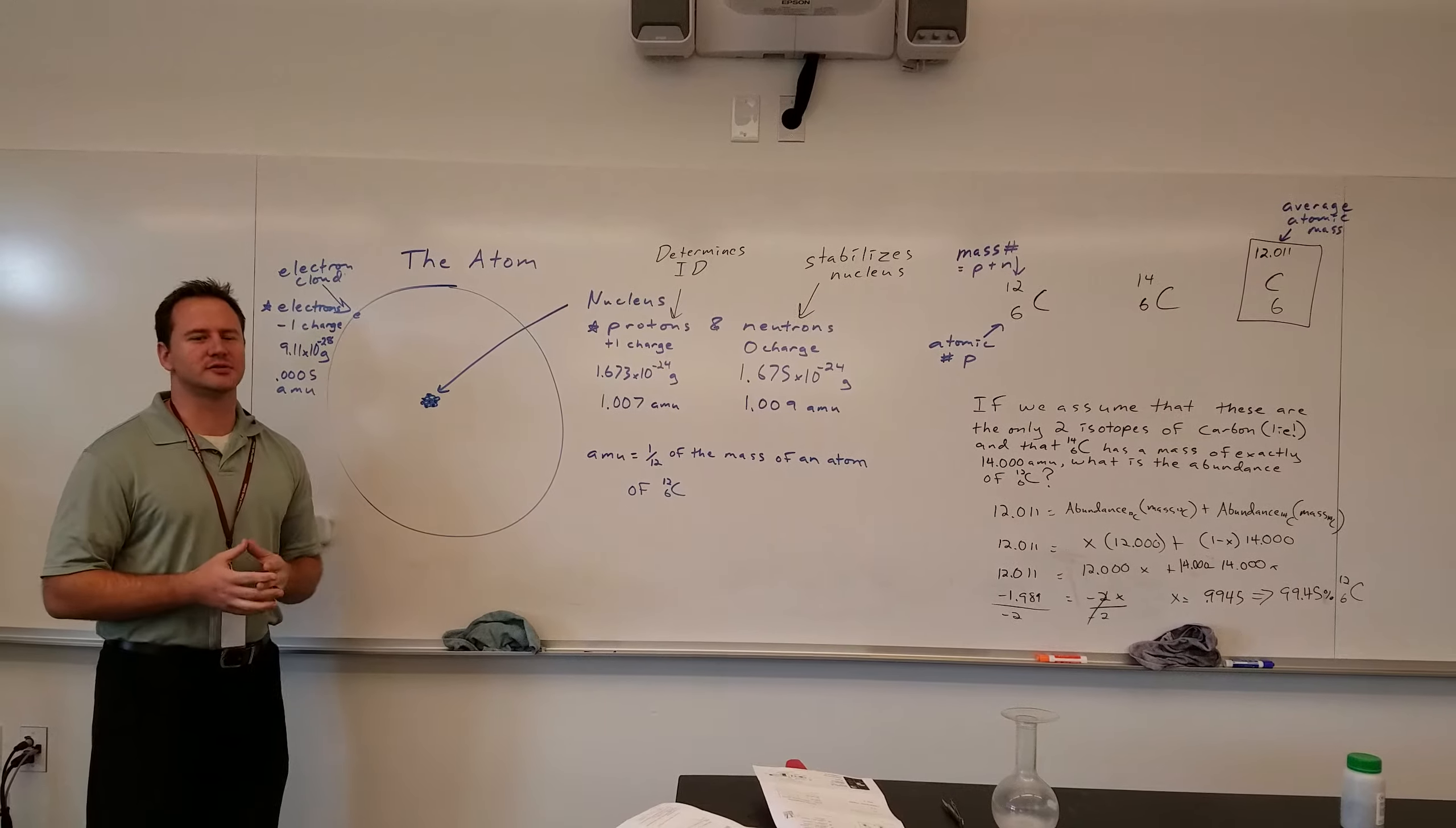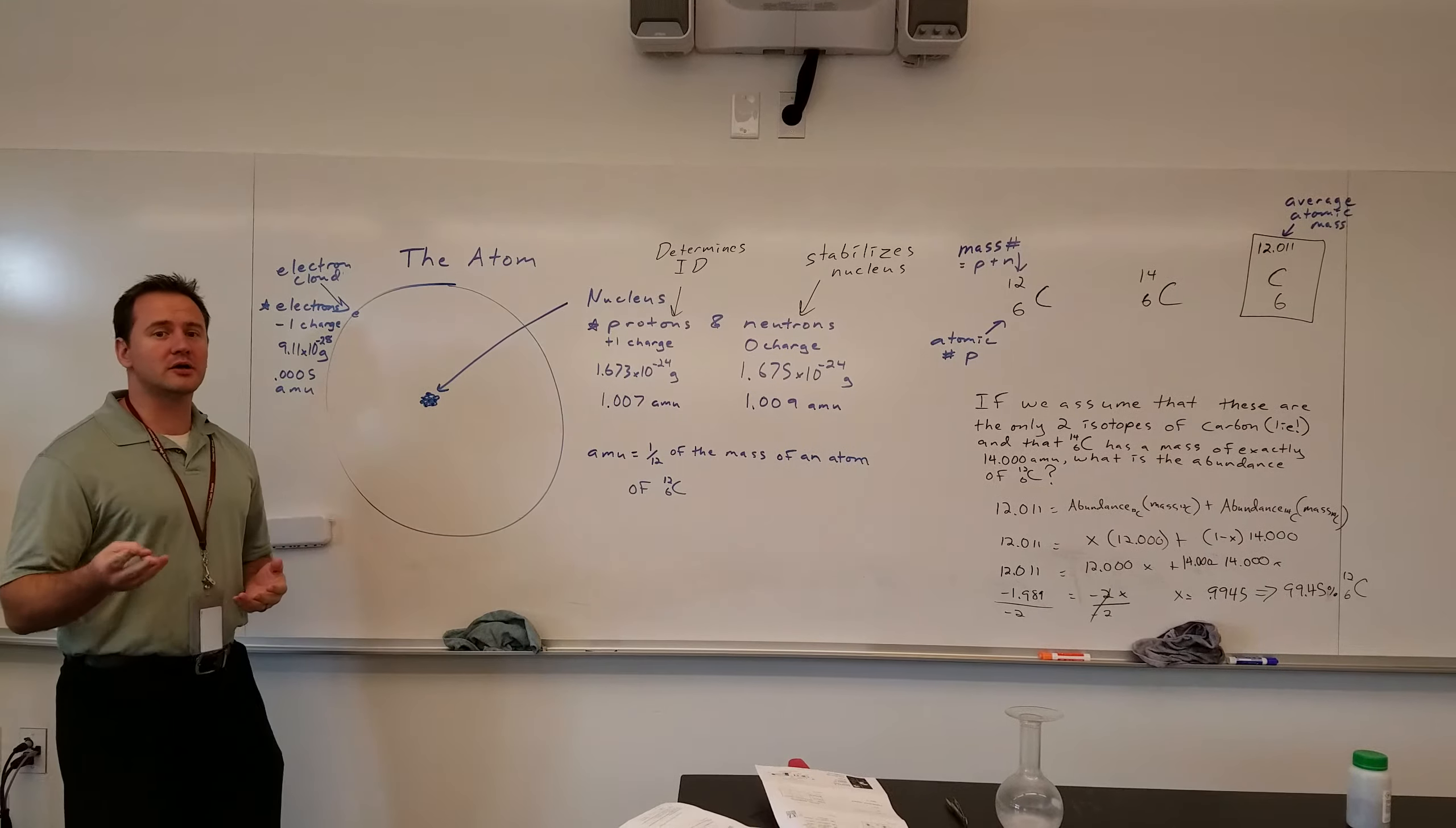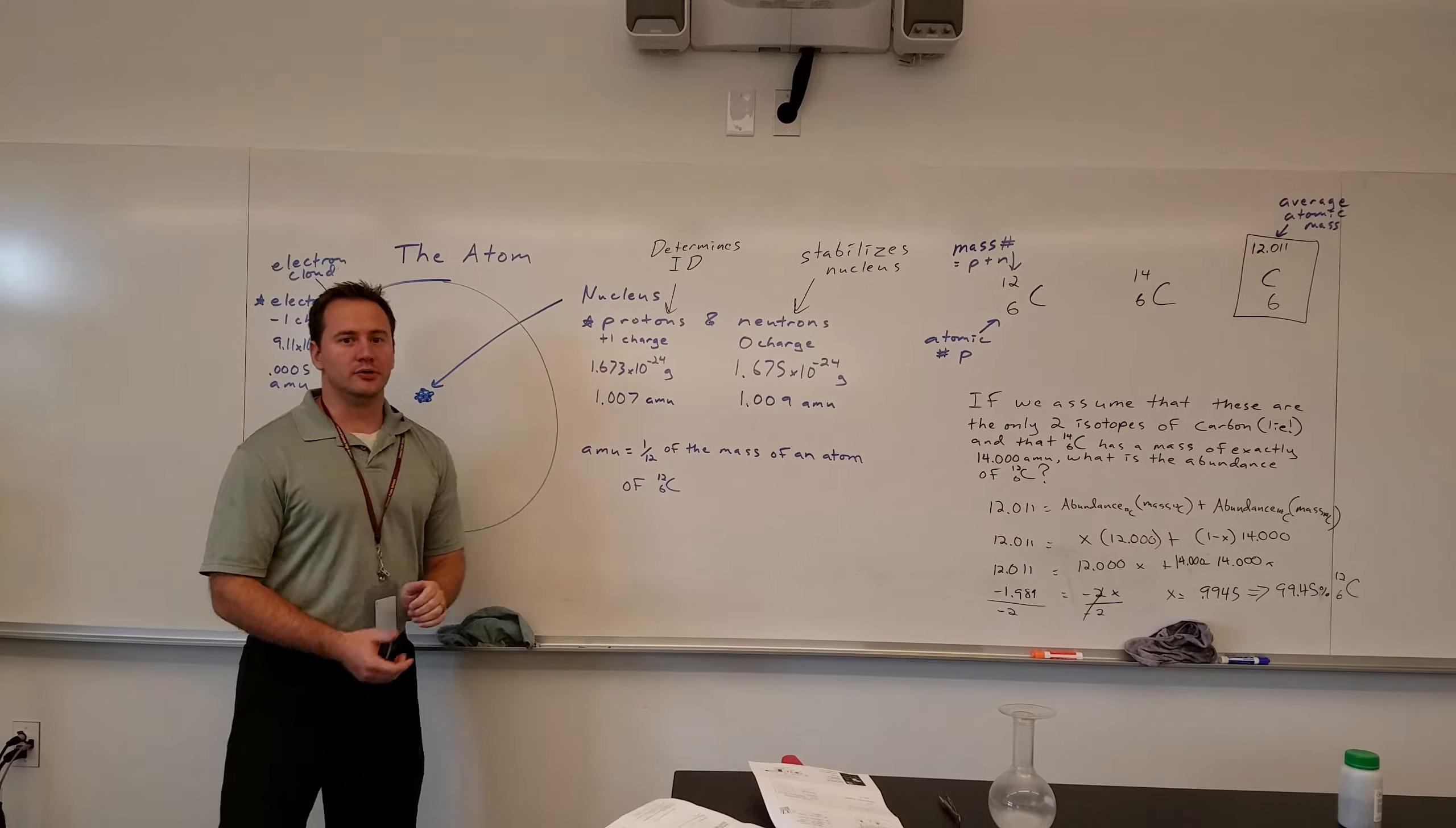They're made of a bunch of tiny little spheres, and I guess now we're going to learn how to describe those spheres. So there's three main components of the atom. One is the electron. Two, proton. Three, neutron.